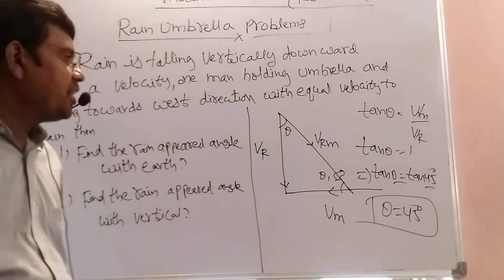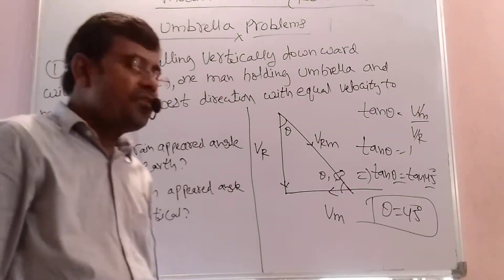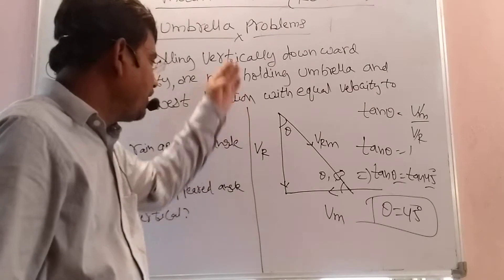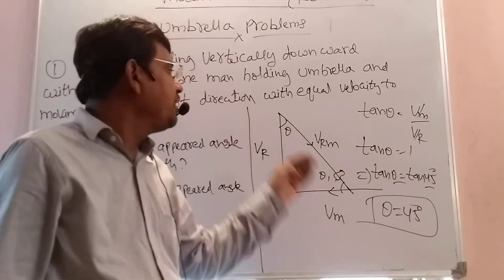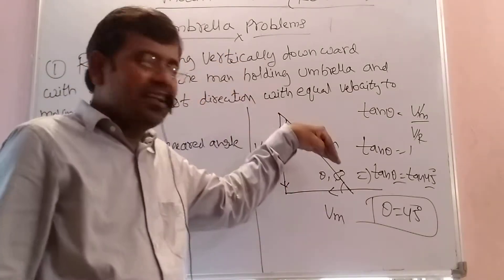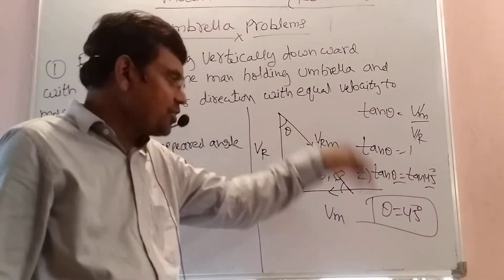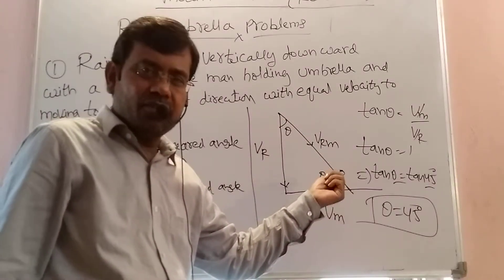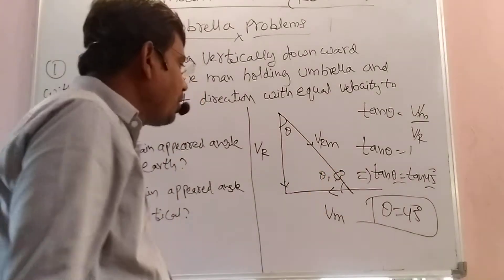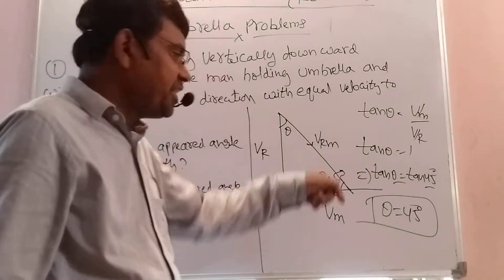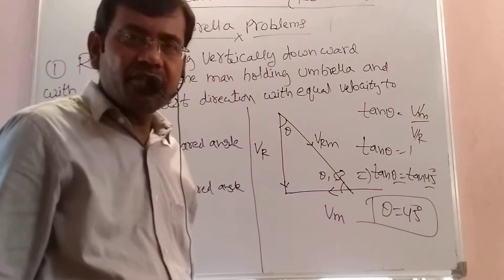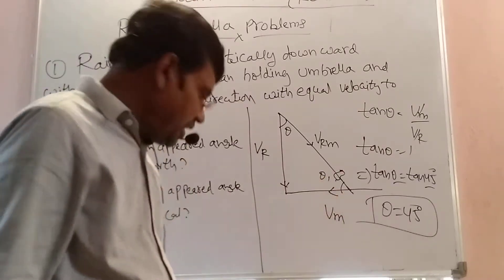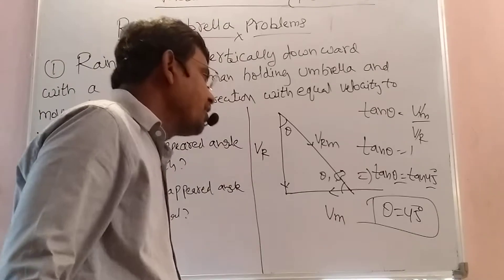The rain is making 45 degrees with the vertical. It is actually falling vertically downward only, but due to the man's motion it appears like this. So he must hold the umbrella along that direction. Now I am finding theta1 — the angle the rain makes with the horizontal direction.